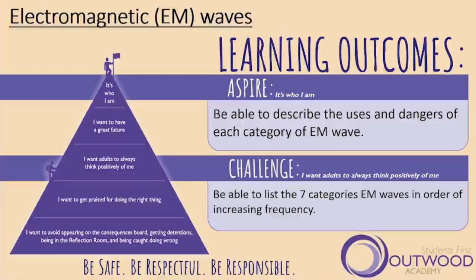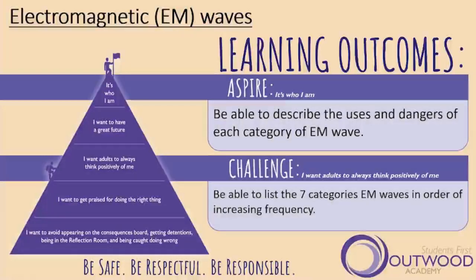Let's break that down. The command word here is 'list', which means just to write them down. So you need to be able to write down the seven categories — that's the seven groups of EM waves — in order of increasing frequency. Remember, frequency is a keyword and it means number of waves per second. So you're going to write them down from the lowest number of waves per second to the highest.